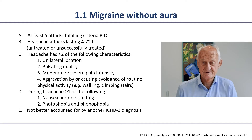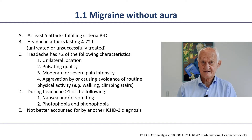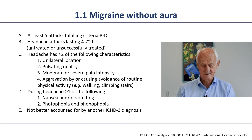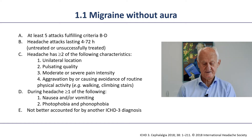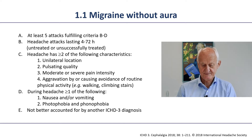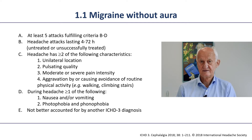To get the diagnosis, a patient has to fulfill all letter headings A, B, C, D, and E. The first criteria are monothetic: there must be at least five attacks, and they must last between 4 and 72 hours untreated or unsuccessfully treated. For pain characteristics, only two out of four are necessary. For associated symptoms, only one of two is needed: either nausea and/or vomiting, or if they don't have that, both photophobia and phonophobia.